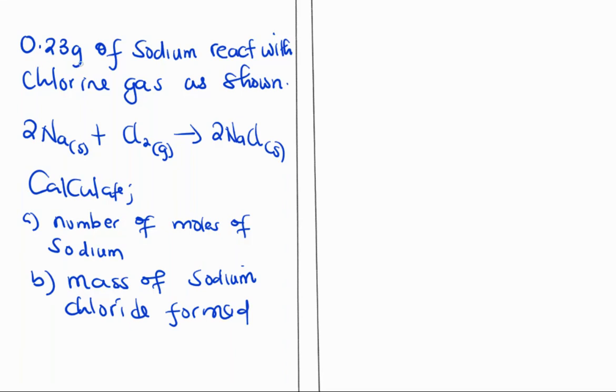The question says 0.23 grams of sodium react with chlorine gas as shown, so sodium plus chlorine to form sodium chloride. Calculate the number of moles of sodium and the mass of sodium chloride formed.